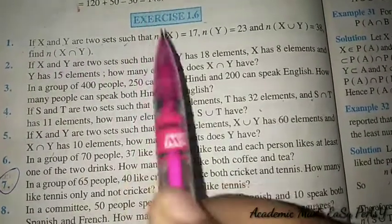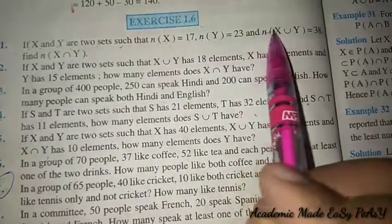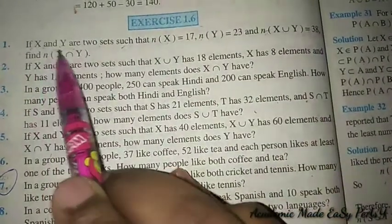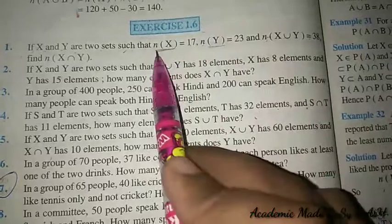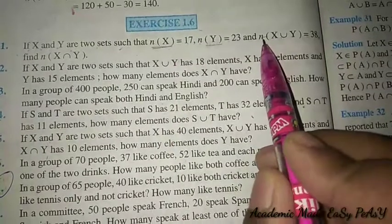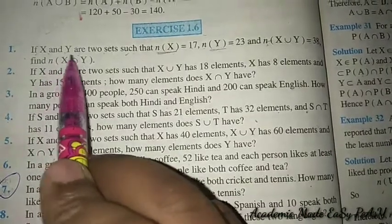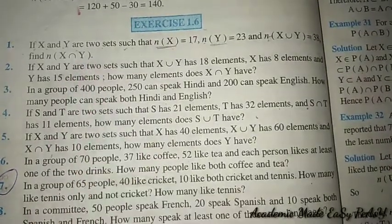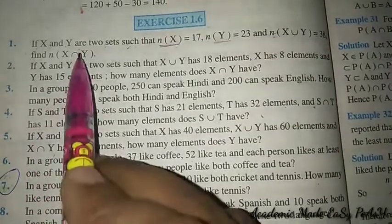Question 1: If X and Y are two sets such that n(X) = 17, n(Y) = 23, and n(X∪Y) = 38, find n(X∩Y). Here, n of a set means the number of elements in that set. We have been given the number of elements and n(X∪Y), and we have to find the number of elements in X∩Y. I have already taught you the formula in the introduction part — please watch that; I will attach the link in the description box.